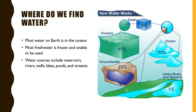Where do we find water? Well, water is all around us. If we look at the earth, most water on earth is in the oceans — 97%. That's salt water. We can't drink salt water, but it is very important. Most fresh water, which is the water that humans and most other animals can use, is frozen, and we can't use the frozen water. That's 77%, frozen in the north and south poles, in icebergs, and in polar ice caps.